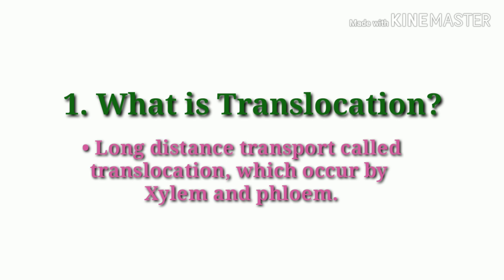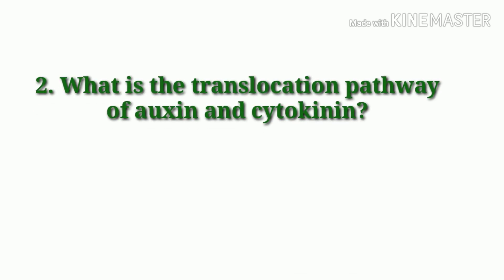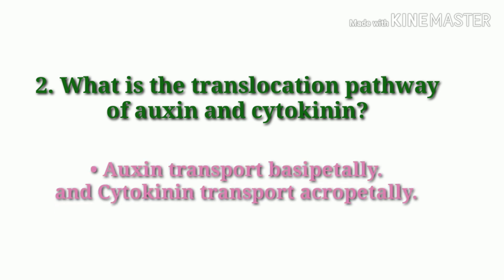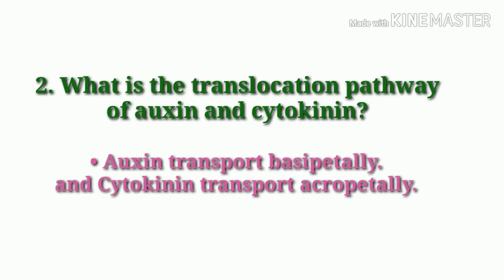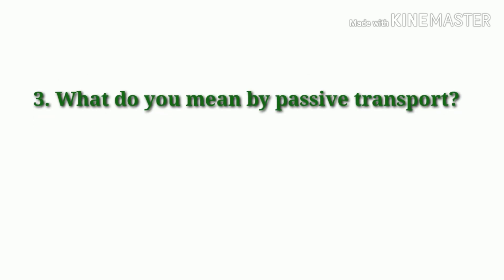Translocation occurs by xylem and phloem in plants. What is the translocation pathway of oxygen and cytokinin? Oxygen transport occurs basipetally and cytokinin transport occurs acropetally.